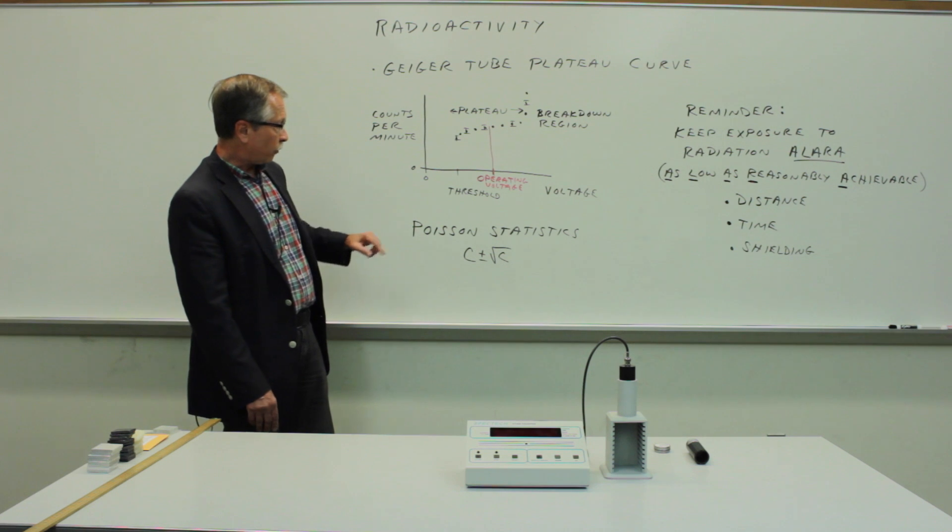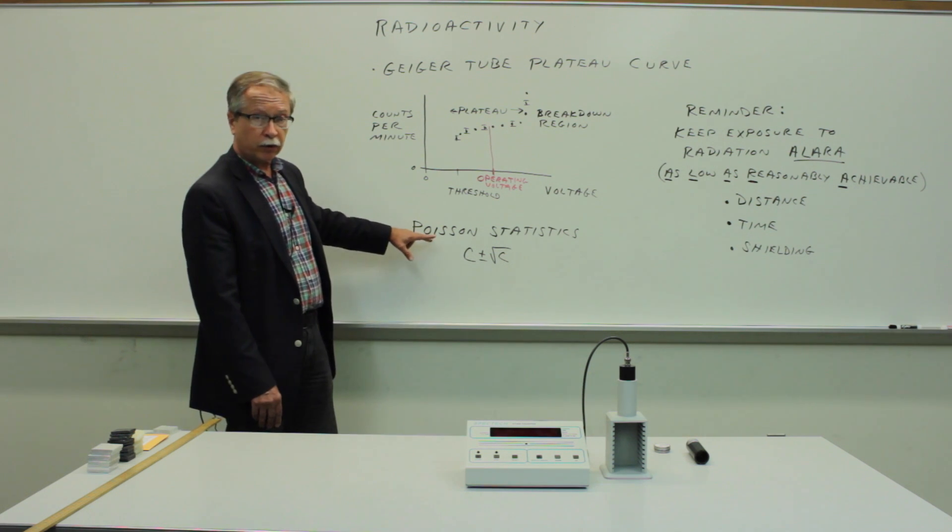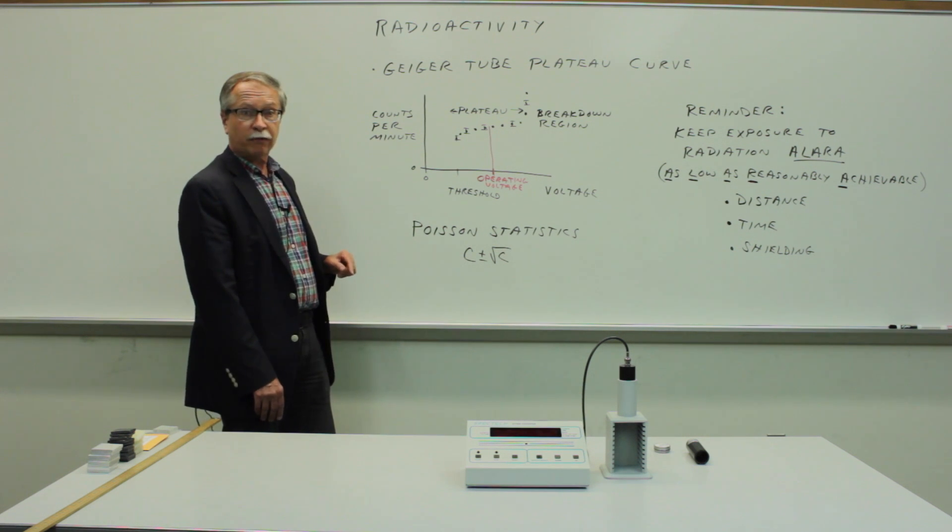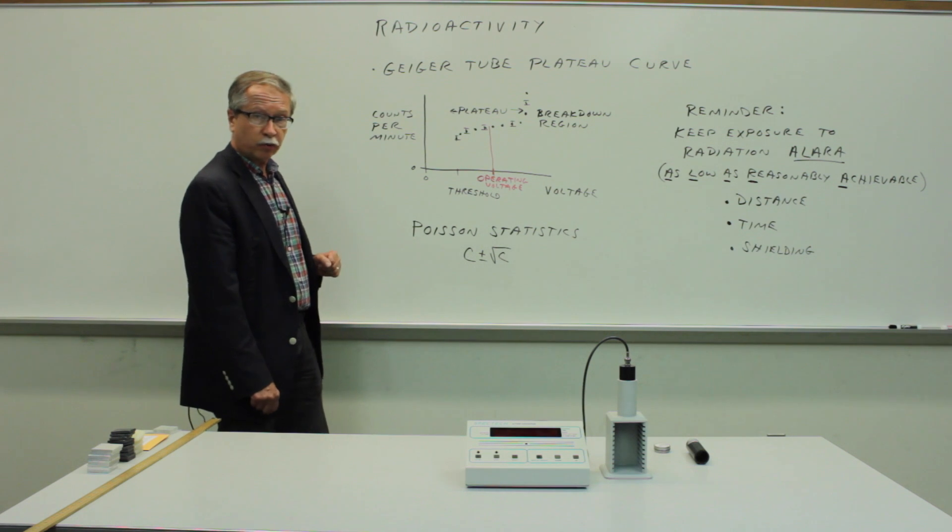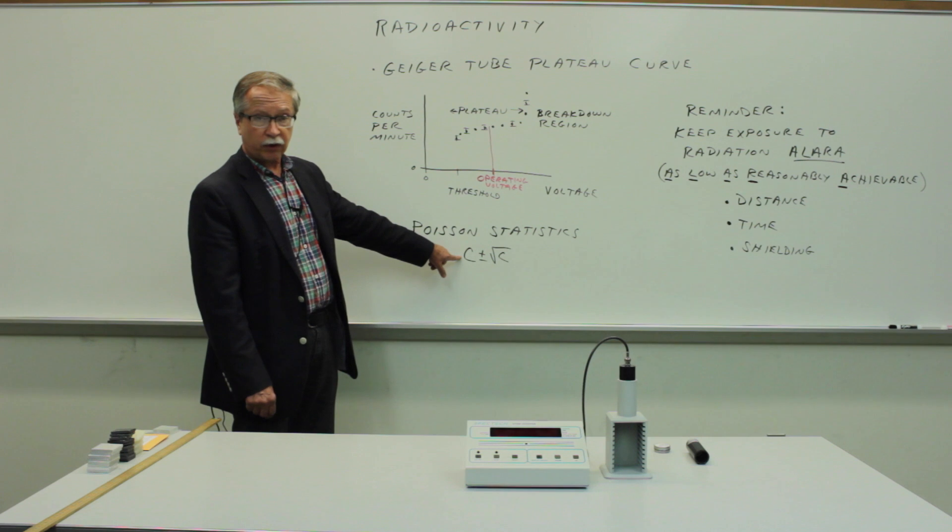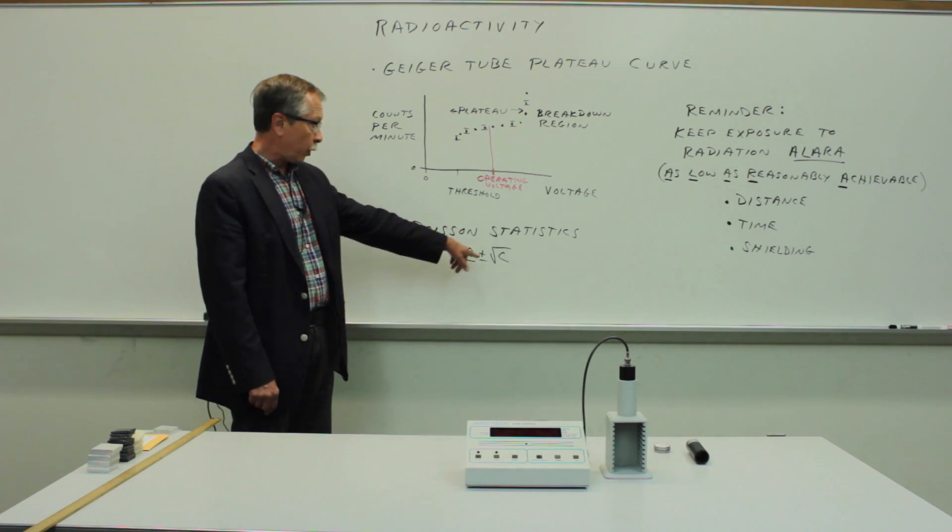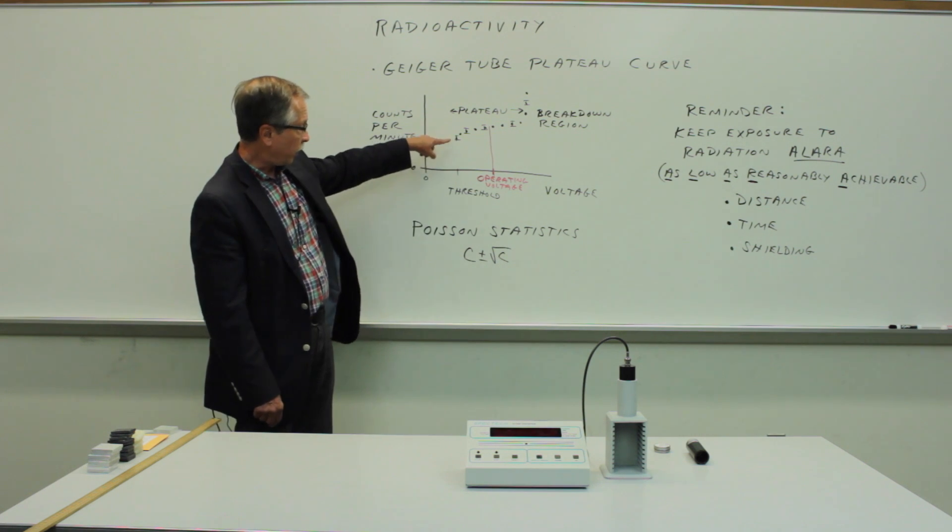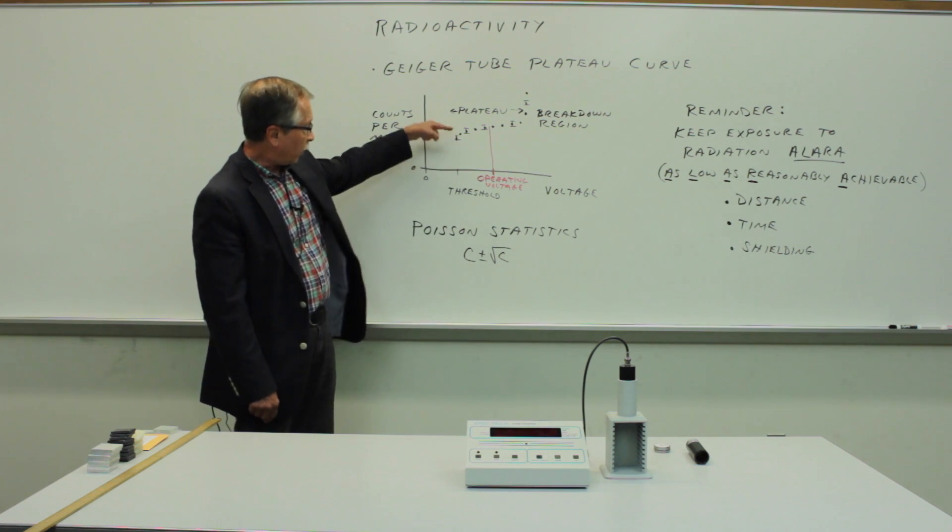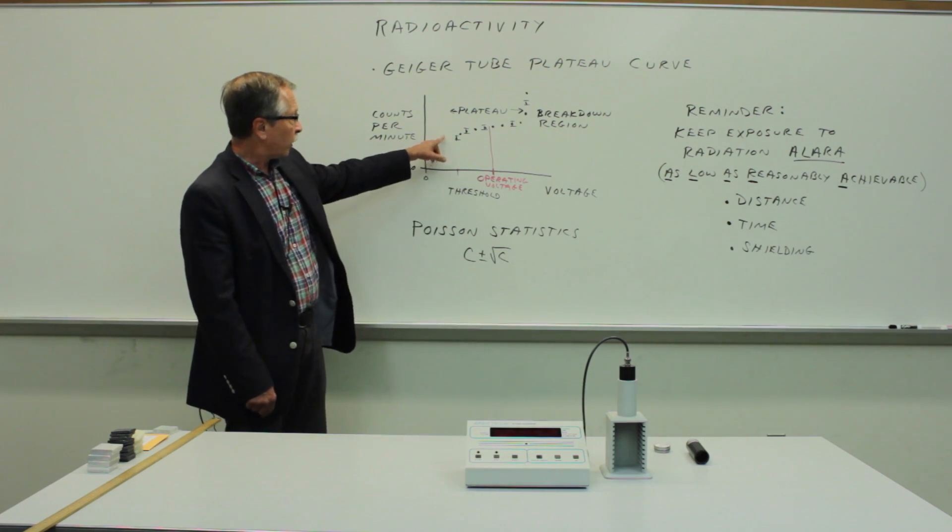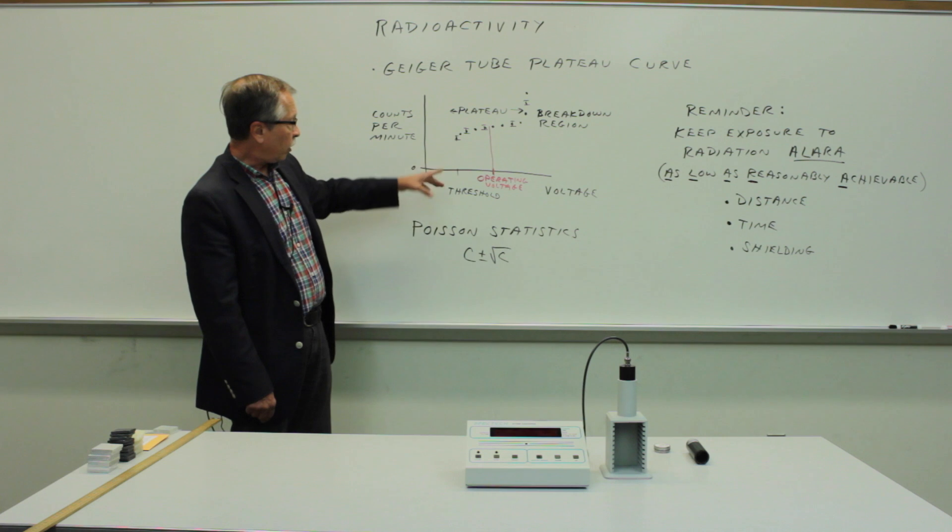So just a couple of reminders before we begin with the instrumentation. The counting procedure involves Poisson statistics rather than Gaussian statistics which we've dealt with in the past. And that simply means that the uncertainty on the measured count is the square root of the number of counts. So when you plot your data you'll plot the number of counts and an error bar representing the square root of the number of counts.